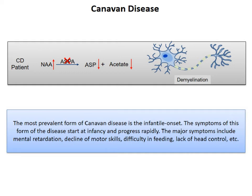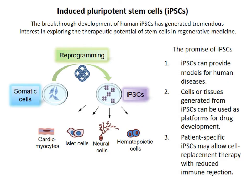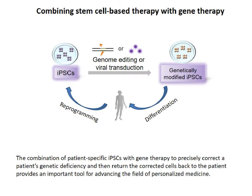Those babies can only be treated symptomatically with no other options. We wanted to develop a cure for Canavan disease children using the human iPSC platform. Human iPSCs, besides their application in disease modeling and drug development, can allow cell replacement therapy with reduced immune rejection. The combination of stem cell-based therapy and gene therapy is enormously powerful. The combination of patient-specific iPSCs with gene therapy would allow us to precisely correct a patient's genetic deficiency and return the corrected cells back to the patient, providing an important tool for advancing personalized medicine.